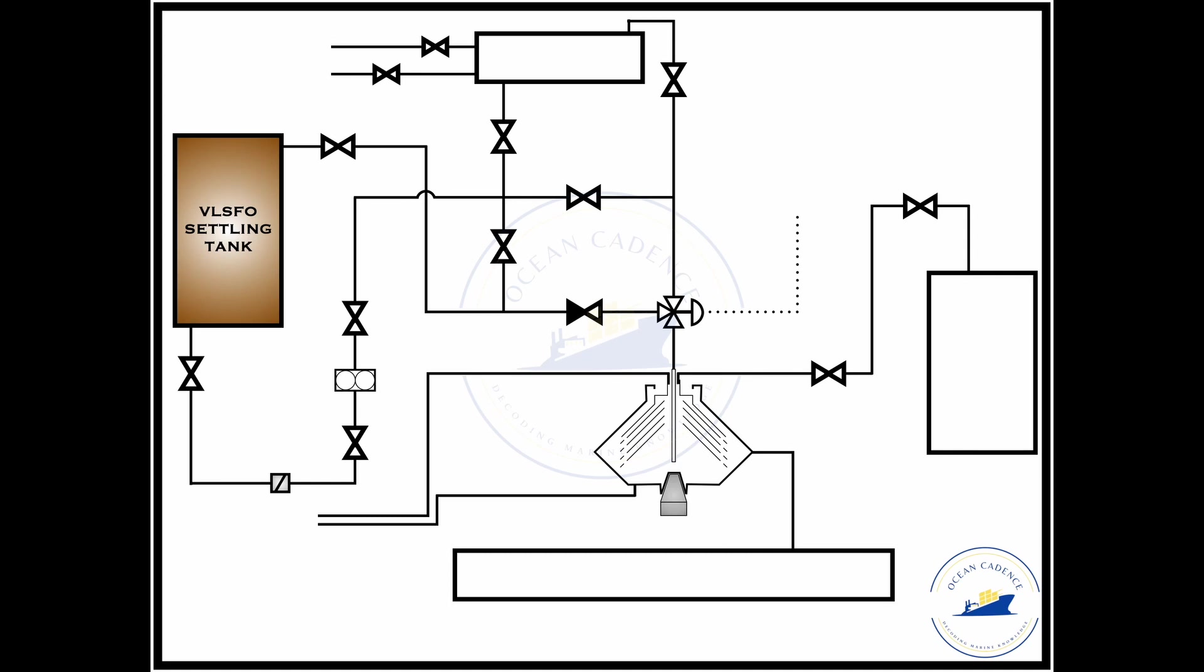Thereafter the fuel which is available in the settling tank is then drawn by the feed pump. Depending upon the design of the purifier and the manufacturer, this feed pump can be a separate unit altogether or it can be an attached gear pump to the purifier itself. However, the line schematic remains the same.